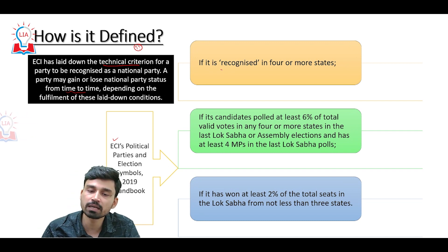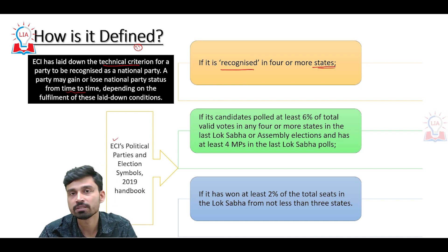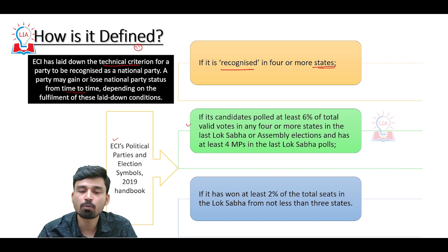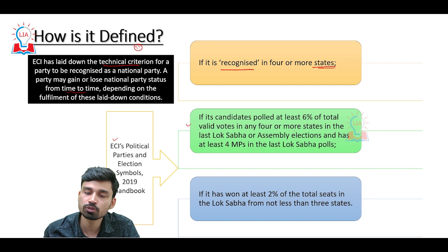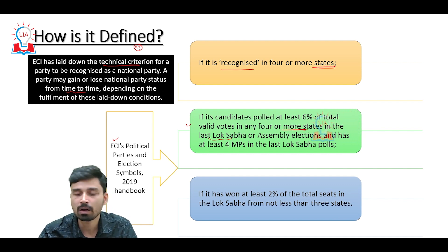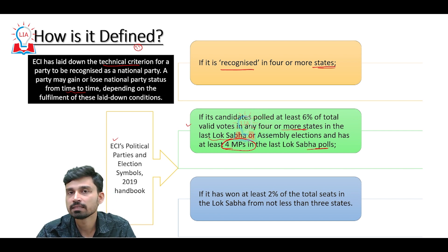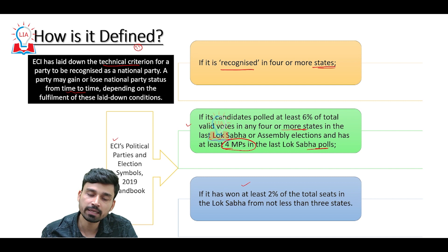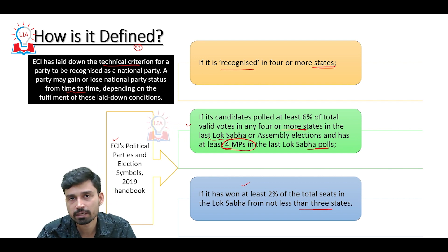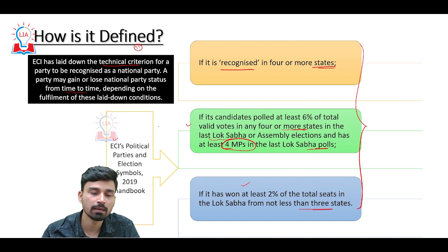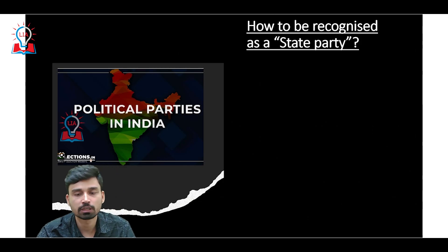First, the party must be recognized as a State Party in four or more states of India. Second, if its candidates poll at least 6 percent of the total valid votes in four or more states in the last Lok Sabha or assembly elections, and the party has at least four Members of Parliament in the last Lok Sabha poll. Third, if the party has won at least 2 percent of the total seats in the Lok Sabha from not less than three states of India. Fulfilling any of these criteria entitles a party to National Party status.